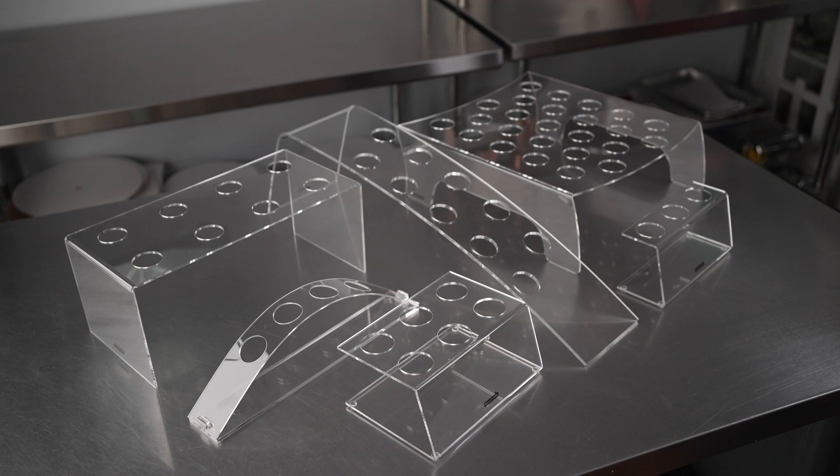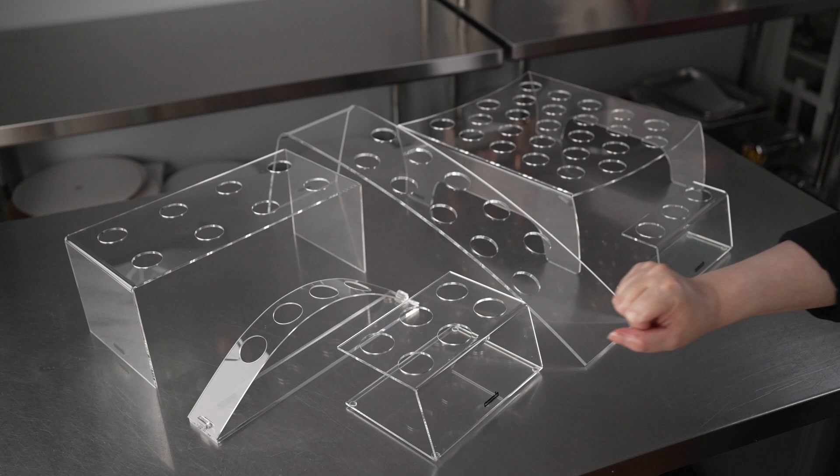We've got the 10-slot angled, which has a nice downward slope, making it easy for guests to grab things even in the back. Then we've got these six- and three-slot ice cream cone stands as well.